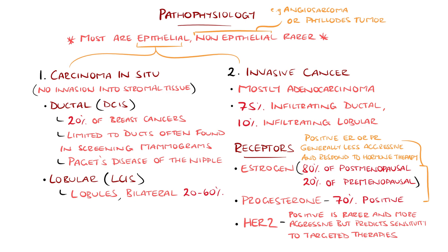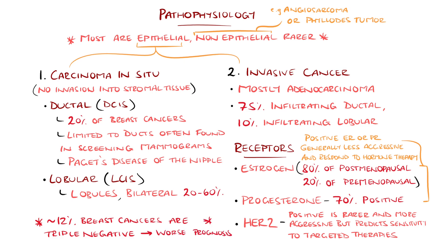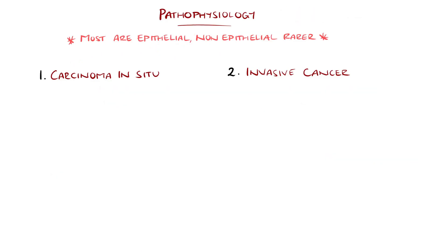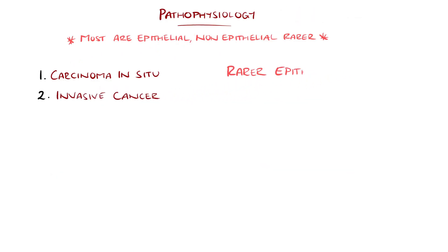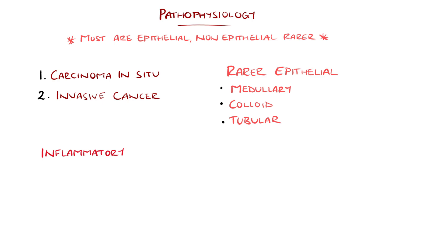Only around 12% are considered triple negative, meaning negative for all three, which features a poorer prognosis. Rarer histological types include medullary, colloid, and tubular, which have a generally more favourable prognosis, while inflammatory or metaplastic subtypes are associated with poorer prognosis.